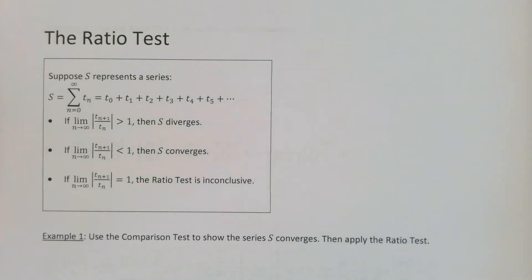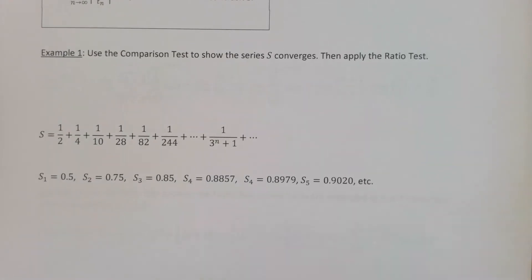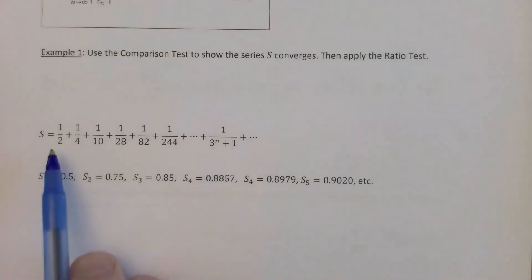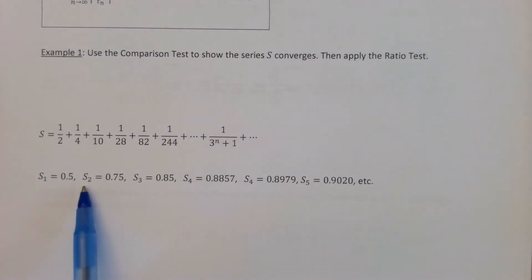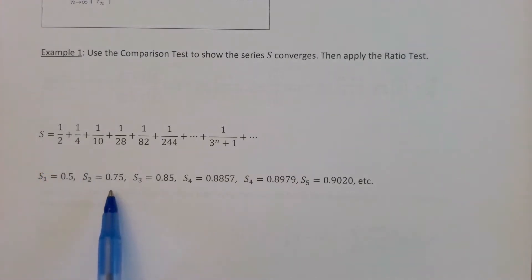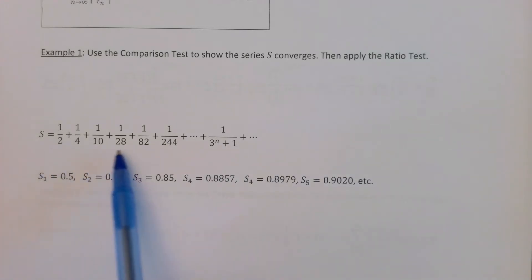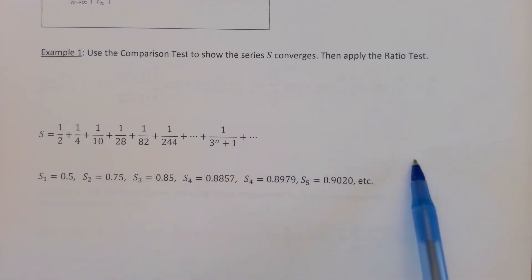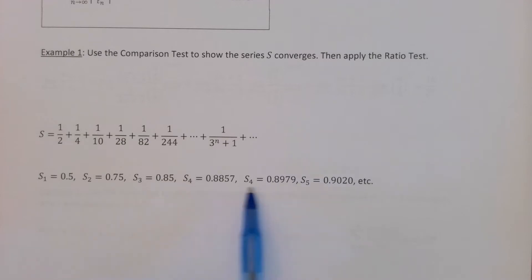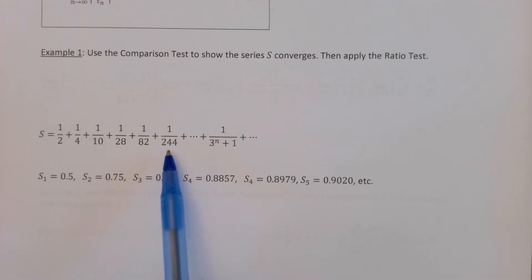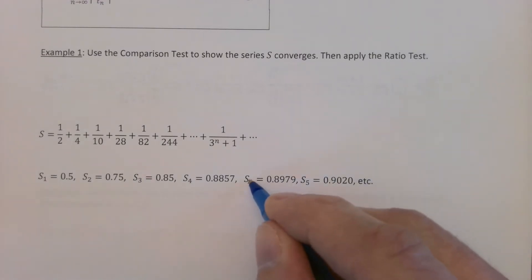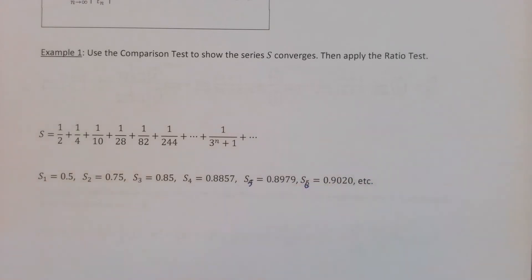We'll encounter each one of these possibilities today. On this first example we have a series of all positive numbers — it's an infinite series — and I've got some partial sums written down. The first partial sum is just the first term, which is 0.5. The second partial sum adds the first two terms together and you get 0.75. The third partial sum is a half plus a fourth plus a tenth. When you're adding up a series of all positive numbers with an infinite number of terms, your partial sum sequence will always be increasing because every new term is positive. S4 is bigger than S3, S5 is bigger than S4, S6 is bigger than S5, and so on.